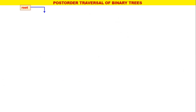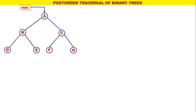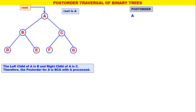Let us consider one more tree. We shall find the post-order for this tree. The root is A. The left child of A is B and the right child of A is C. Therefore, the post-order for A is B, C, A — with A processed. Therefore, A is replaced by B, C, A with A processed.